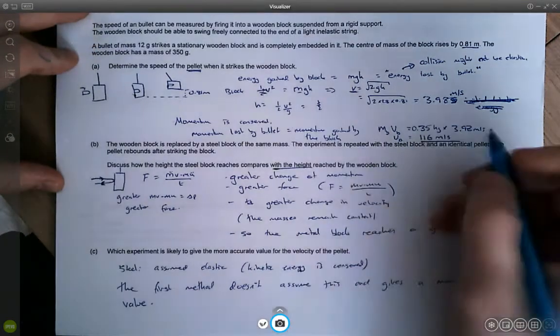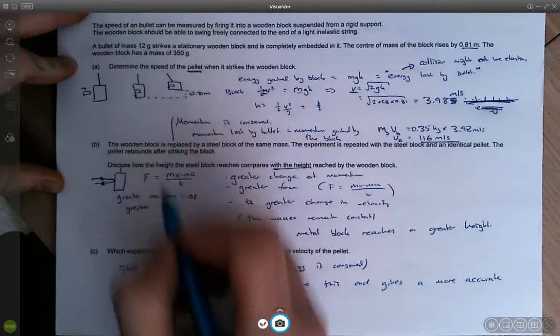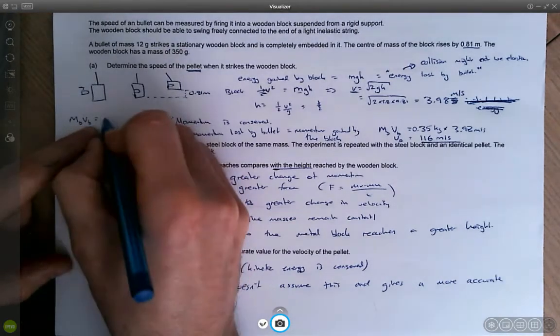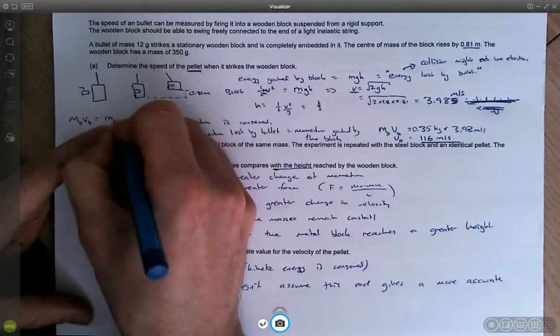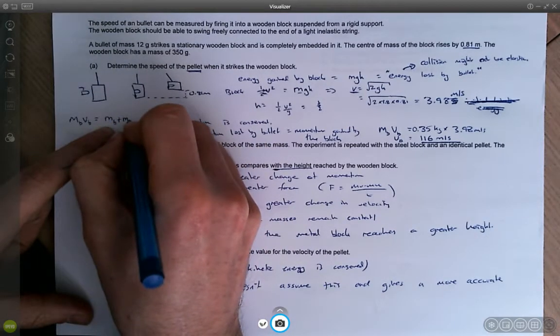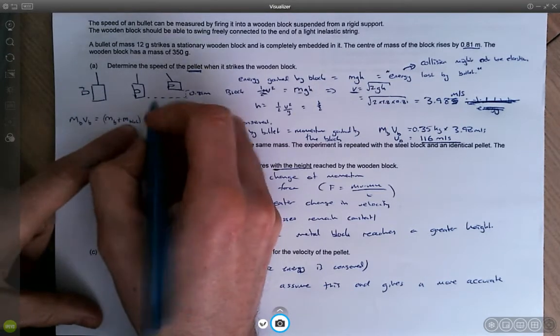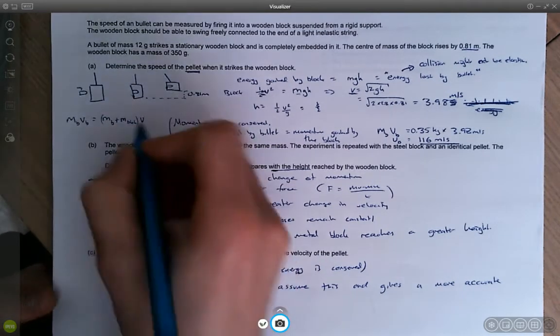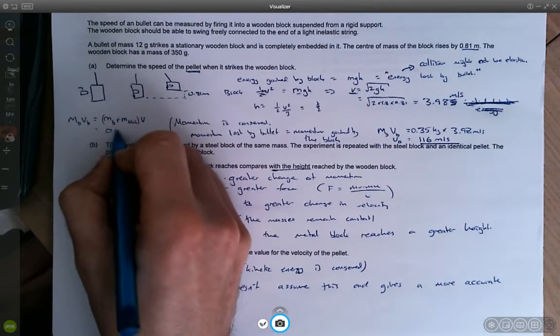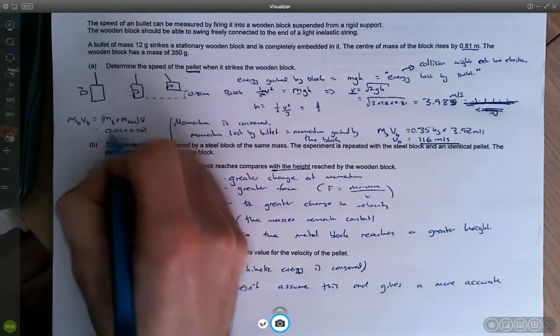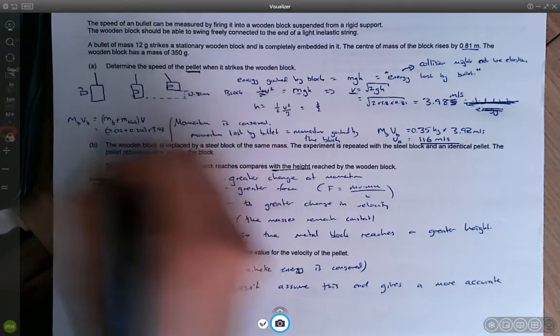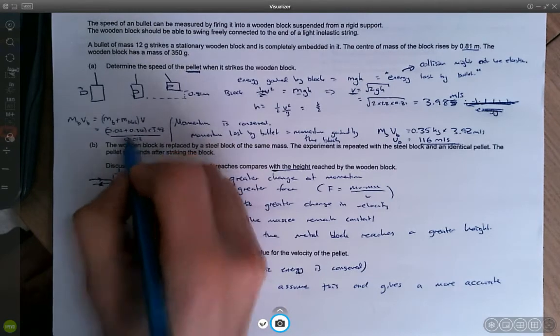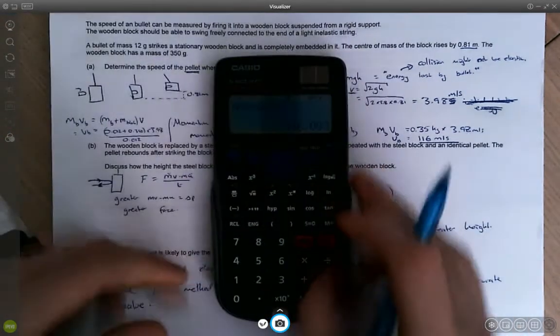Well, hopefully, you realized that I didn't actually do this calculation properly. So what I should have said is the momentum of the bullet times by the velocity, so the mass of the bullet times by the velocity of the bullet is equal to the momentum of the final object, which is obviously the total mass of both of these things, the momentum of the bullet plus the mass of the bullet plus the mass of the block times by the velocity of the combined objects. So actually, what would this be? This will be 0.012 plus 0.350 times by 3.98. And that's going to be equal to, or if we divide that by the mass of the bullet, that will be equal to the velocity of the bullet. So now we can actually get the correct answer.